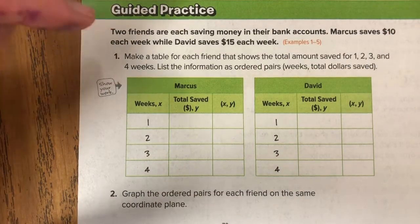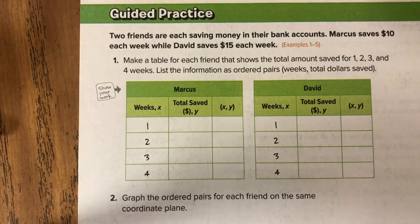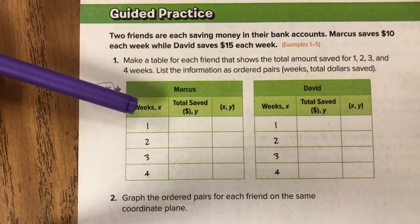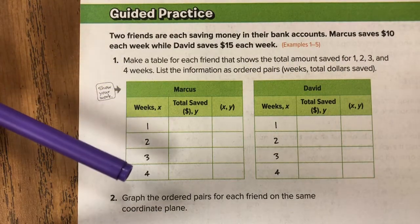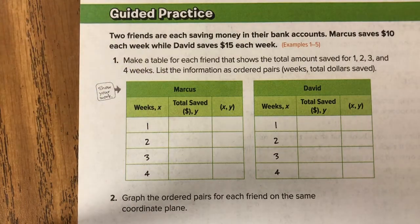All right to begin here we have our two ratio tables for Marcus and David. They gave us a scenario. We're gonna fill in this and get our X and Y's. You can see here that they've already determined that our X will be the weeks and then the Y's is gonna be the amount of money that they save each week. So let me read this to you.